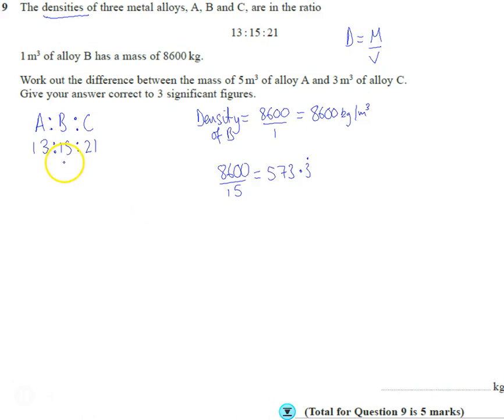I get 573.3 per meter. So that's how much one part is worth. So these are the, if I multiply each of these by 573.3, so if I consider that A first, that's 13 times 573.3, comes out as 7453.3 recurring. So the ratio to, well we know that B is worth 8600, these are the densities. And we know that C is going to be 21 times this number, which comes out as 12,040.